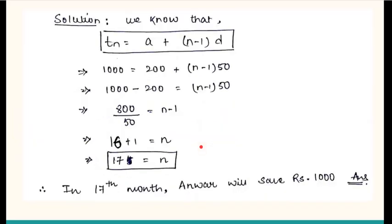When you do the calculation, it is in the 17th month that Anwar is saving rupees 1000. That means, January, February, March, and so on - after 17 months, the saving he does will be 1000 rupees. This is what the question was asking and this is how we have solved it. You can pause and check the steps.